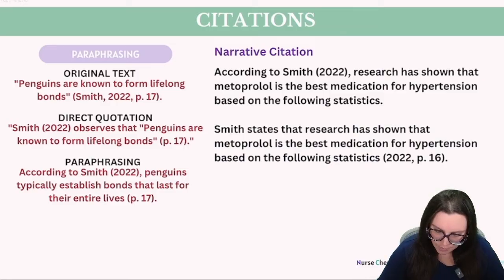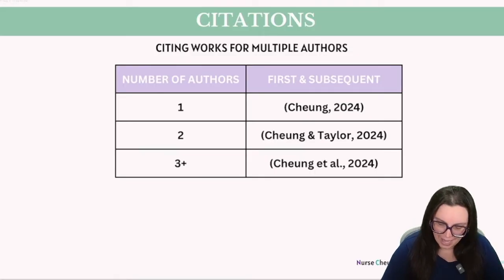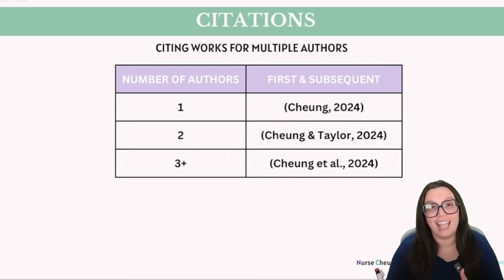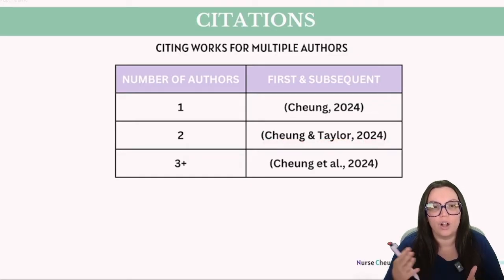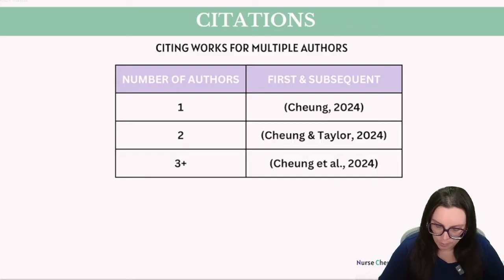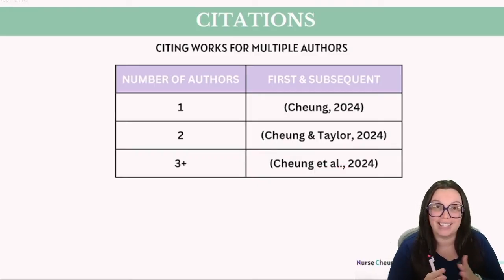For sources with two authors, we place the ampersand between their names followed by the publication year, like Chung & Taylor, 2024. For sources with three or more authors, mention only the first author's name — Chung — and then add 'et al.' followed by the publication year in order for that to be correct.